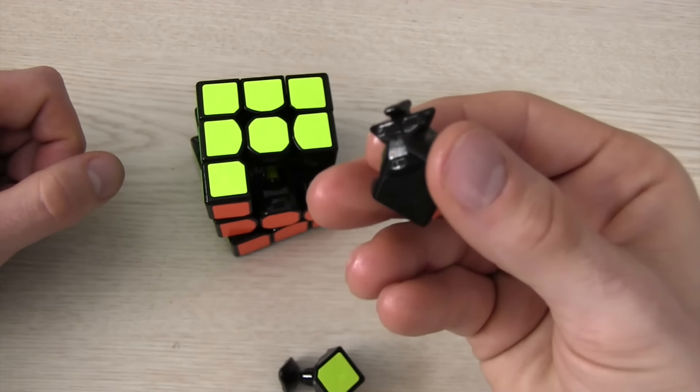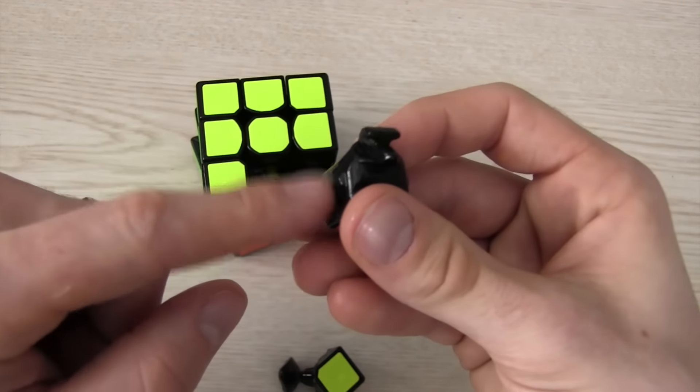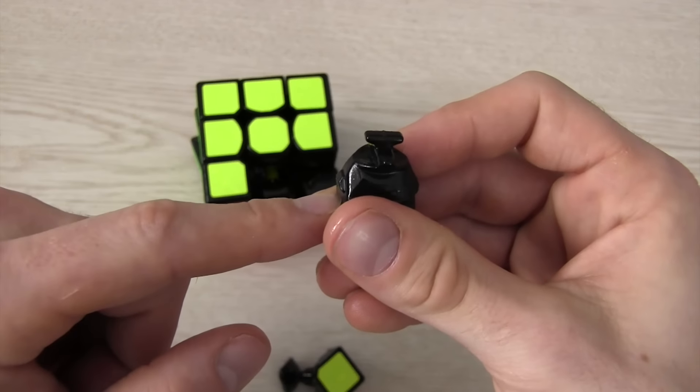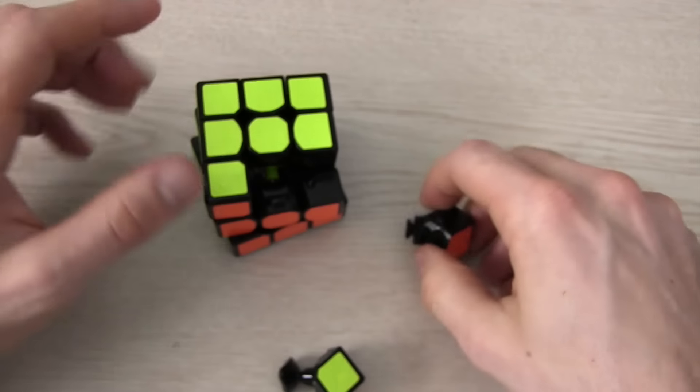These edge pieces are also very similar to the Yuxian and they have that bump. Now this bump is very similar to one you'd see on the Aolong as well but it looks much more similar to the Yuxian.